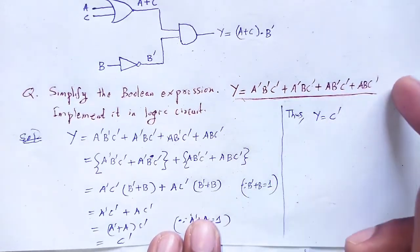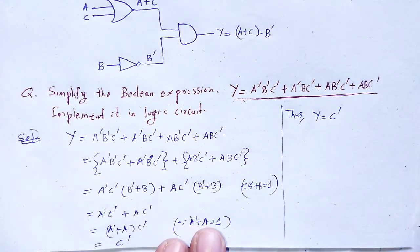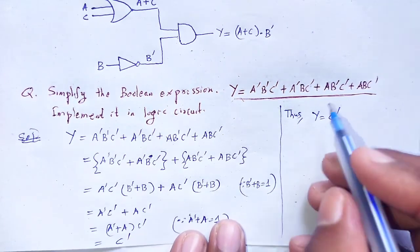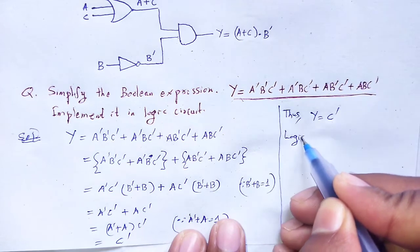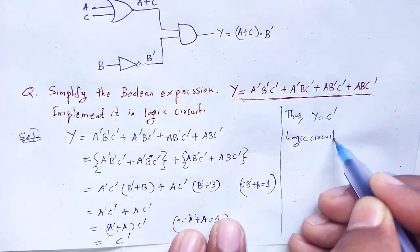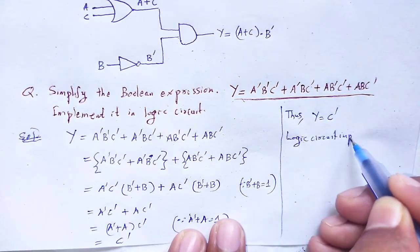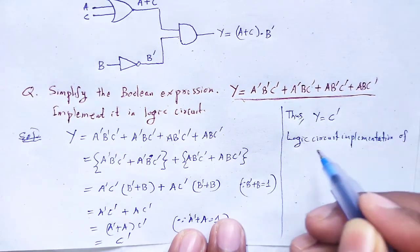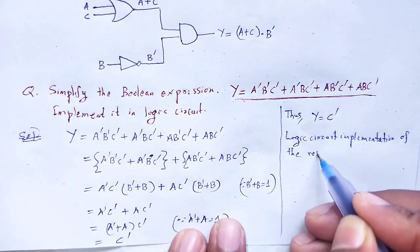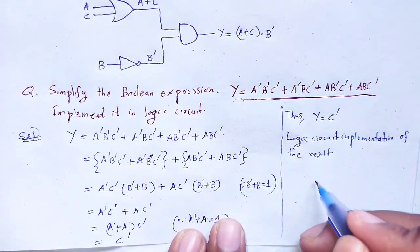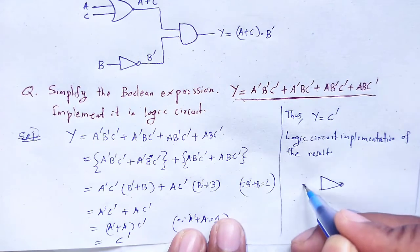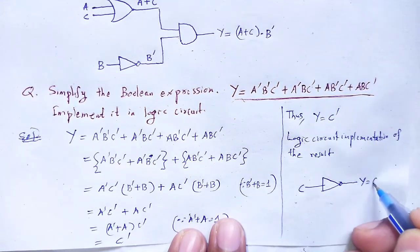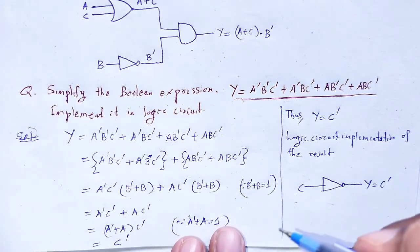Instead of that complicated circuit, we can easily use a simple logic circuit implementation of the result Y = C'. We just need a NOT gate with input C, and the output we obtain is C'.